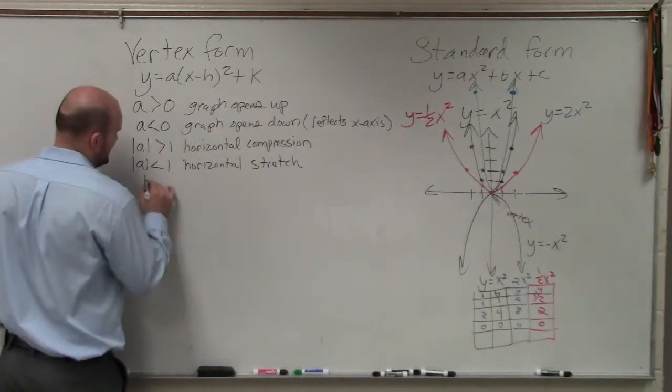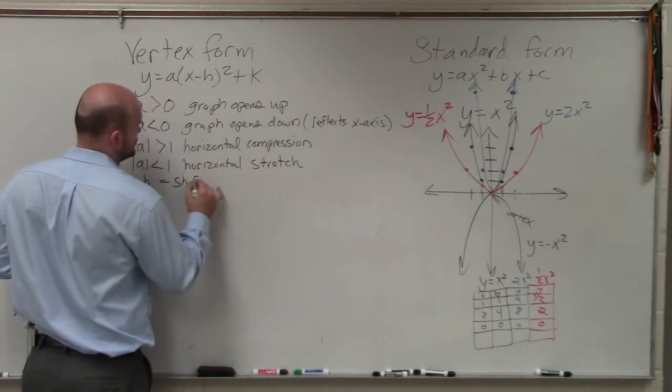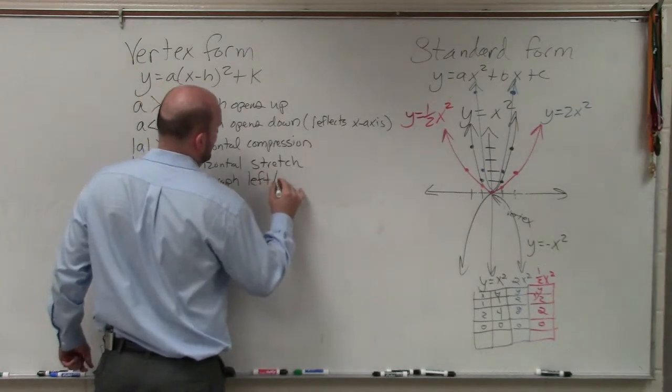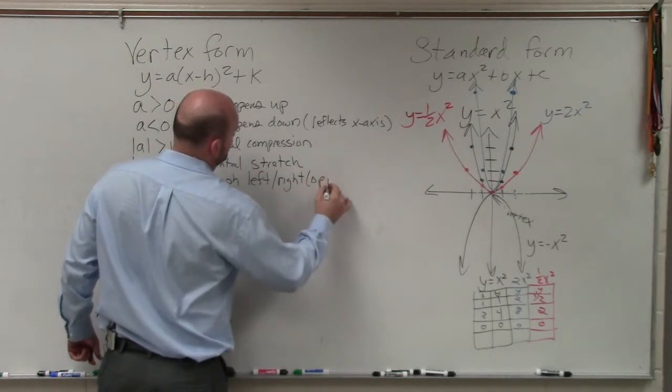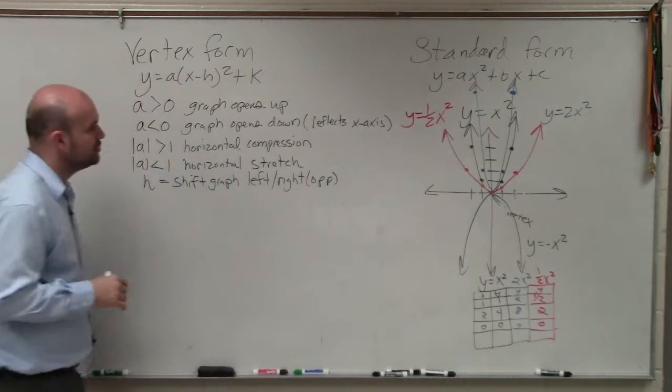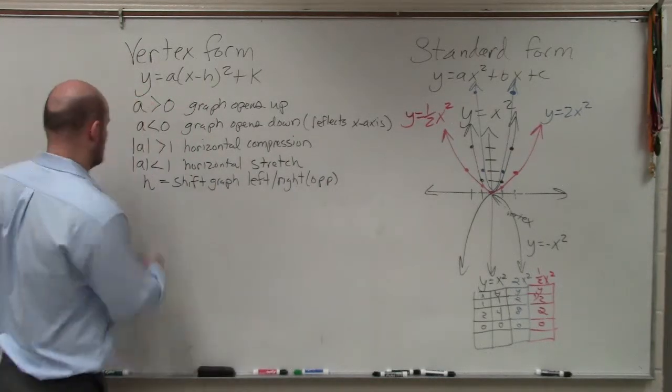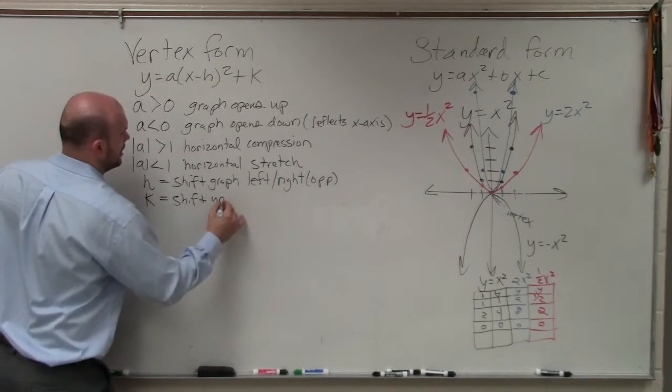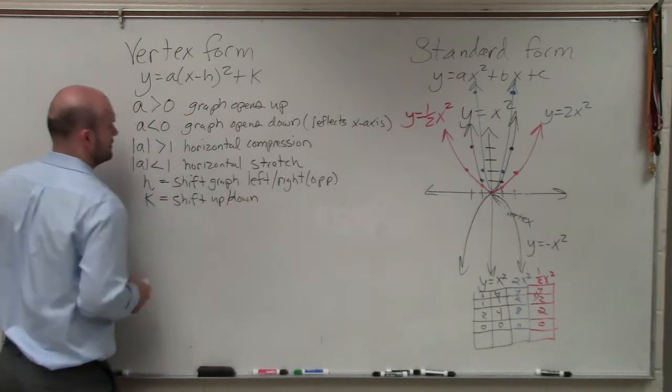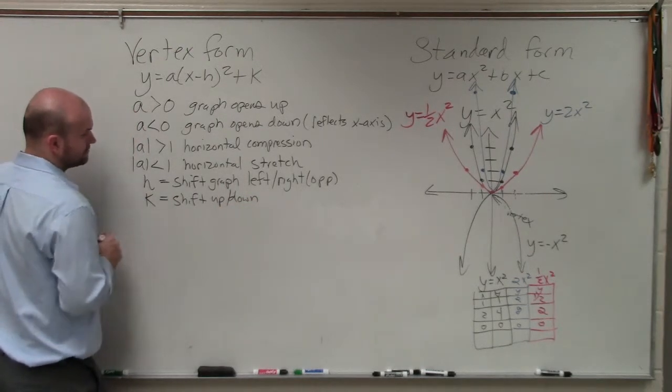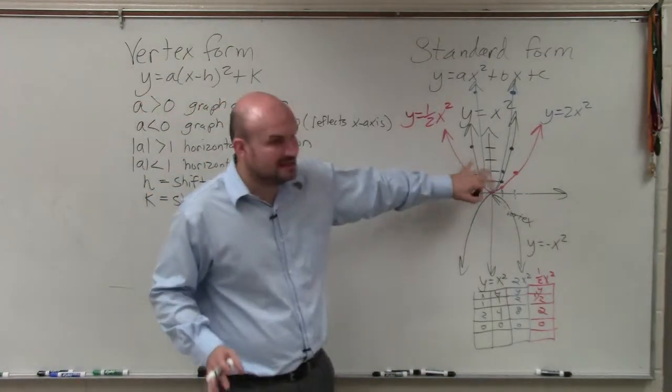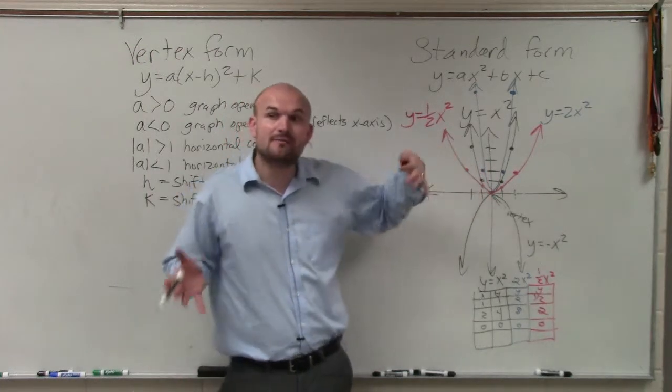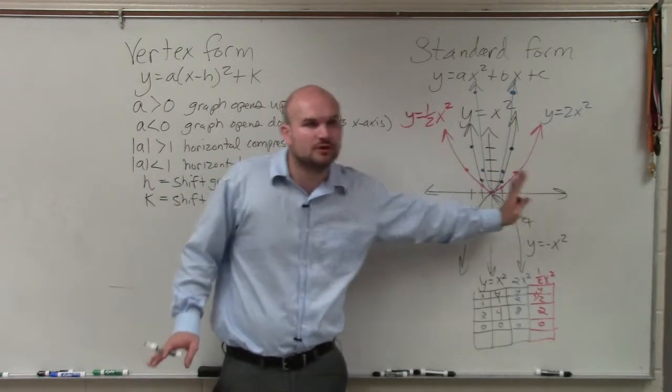The last thing that we're going to do with is going to be H, which is going to shift the graph left and right. And to make it simple, I'm just going to say it's the opposite. Where K equals, you're going to shift up and down. So basically, what H does is, you guys notice when I did all three of these, the vertex is the same. It never moved. But when now I'm going to apply H and K, what that's going to do is that's going to move the graph.